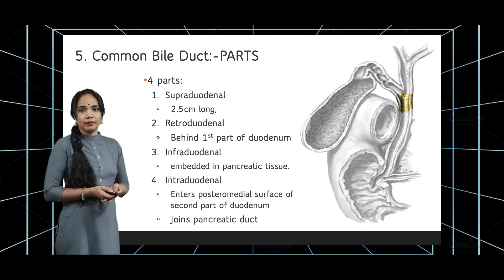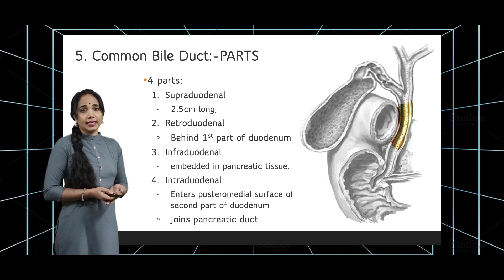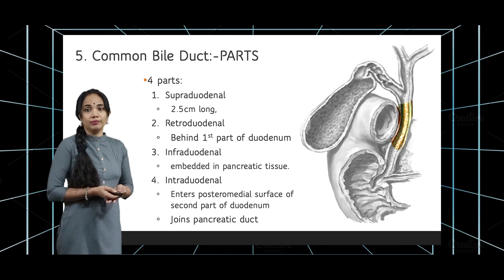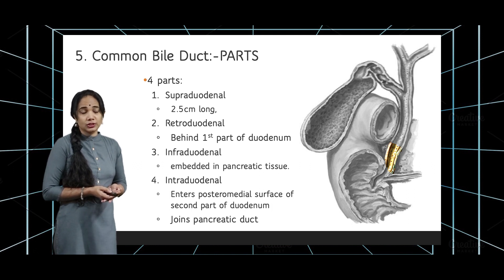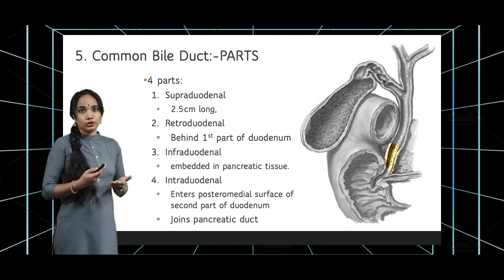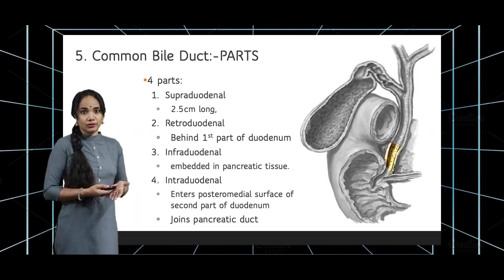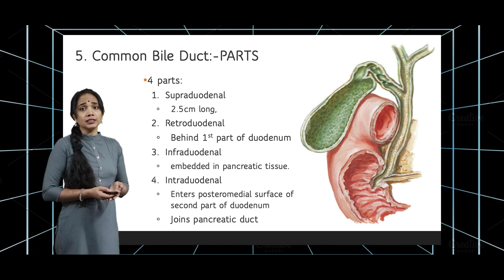The supraduodenal part is around an inch — 2.5 centimeters — long. The retroduodenal part lies behind the first part of the duodenum in close association with it. The infraduodenal part — the third part — is embedded in the pancreatic tissue, so in dissection you have to dig through the substance of the pancreas to expose it. The intraduodenal part is the last part and is seen within the wall of the duodenum.